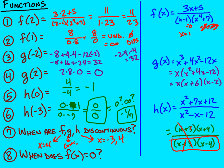And the last thing. When does the function f of x equal zero? Well, that means that the function equaling zero means that the whole thing equals zero. That means the top equals zero. So three x plus five has to equal zero, meaning three x equals negative five, or x equals negative five over three. So this happens when x equals negative five-thirds.